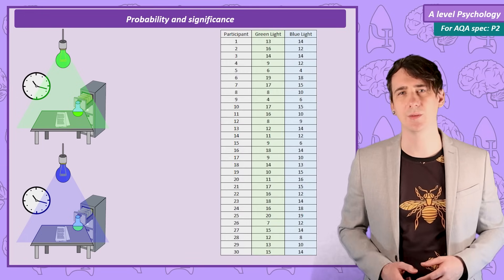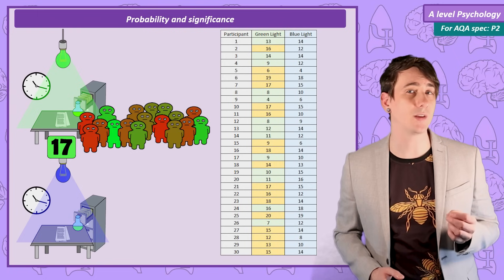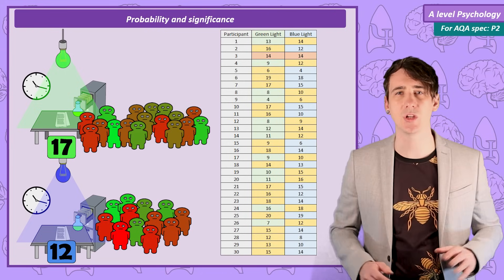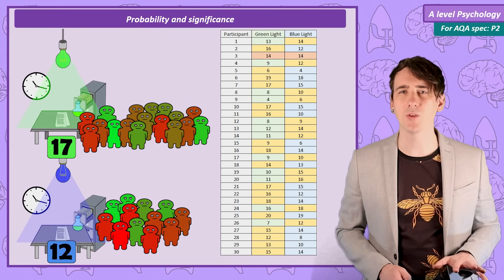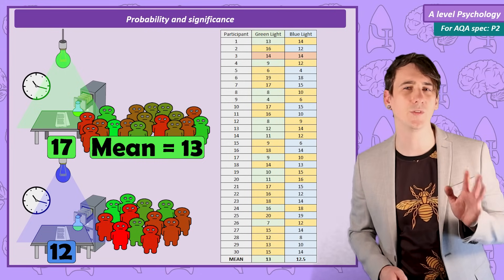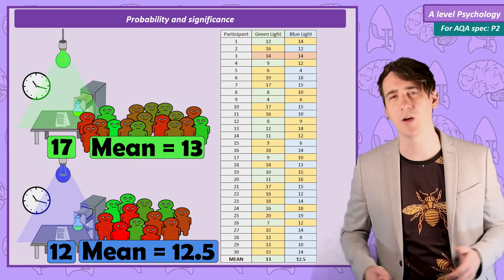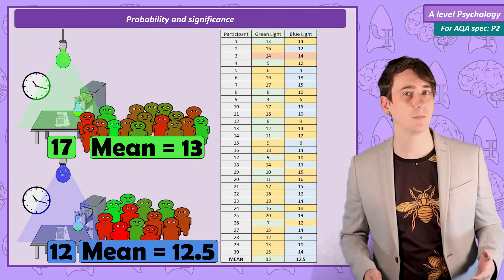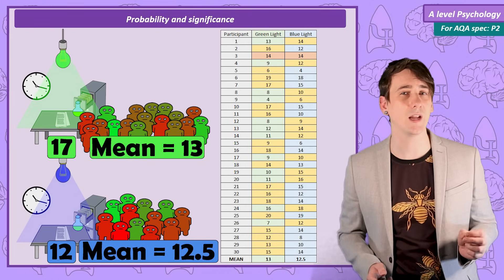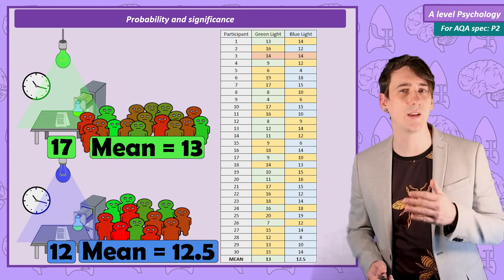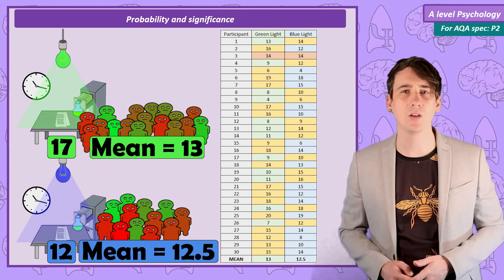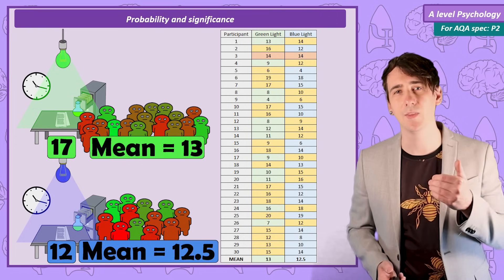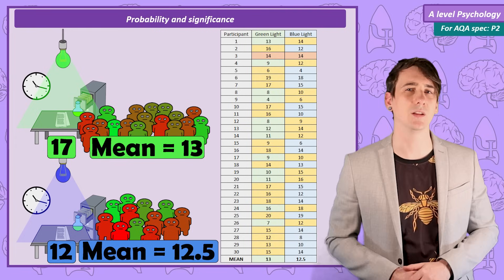So comparing each condition, 17 participants recall better in green light, and 12 better in blue light, and in one condition there was no change. If I averaged the number of words recalled, in green light the average recall was 13 words, and in blue light it was only 12.5 words. I can accept my alternate hypothesis, right? After all, more people had a higher recall in the green light condition than in the blue light condition. And when I look at the mean score, it is true that on average recall was higher in the green light condition than the blue light condition.